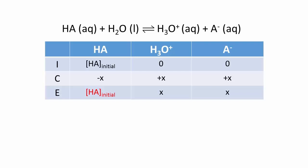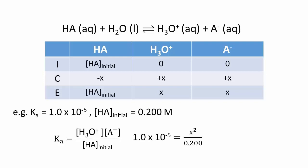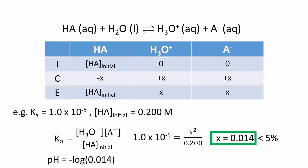Using, for example, a weak acid, HA, with a dissociation constant of 1.0 times 10 to the negative 5 and an initial concentration of 0.2 molar, we see that the calculation of the pH is rather easy. Once we find x, provided it's smaller than 5% of the initial concentration of HA, it is a very accurate value for the hydronium concentration, and we calculate the pH directly.